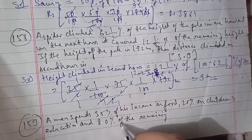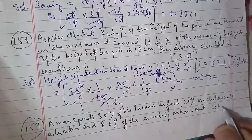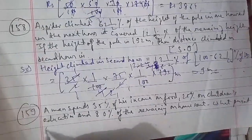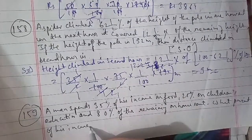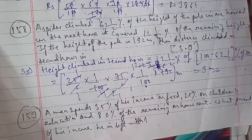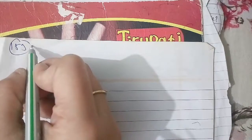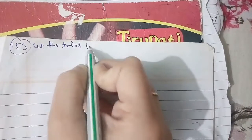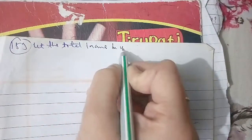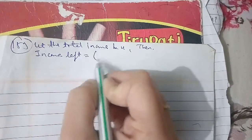Solution for Q159: Let the total income be X. Income left = (100 − 80)% of (100 − (35 + 25))% of X = 20% of 40% of X = (20/100) × (40/100) × 100% of X = 8% of X. So the answer is 8% of his income.